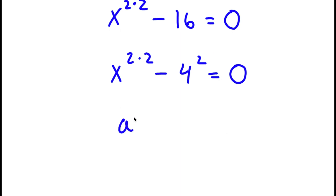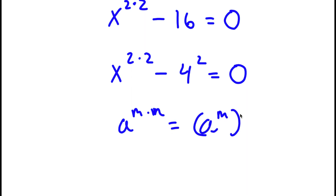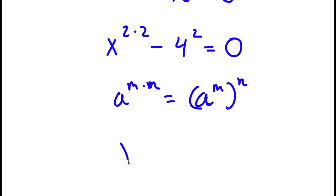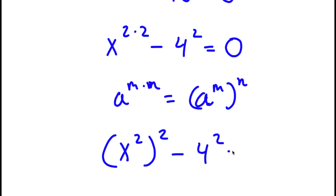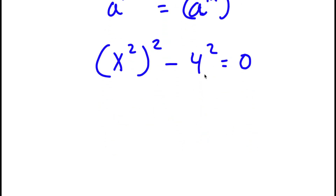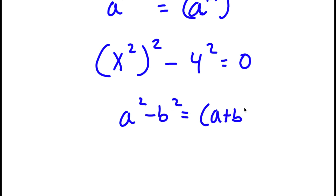If I have something in the form a to the power of m times n, this is equal to a to the power of m to the power of n. So x to the power of 2 times 2 I can rewrite as x to the power of 2 to the power of 2, minus 4 to the power of 2, equal to 0. Now, if I have something in the form a squared minus b squared, this is equal to a plus b times a minus b.